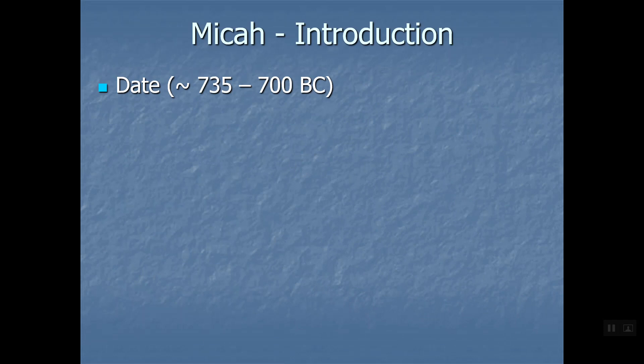We did five of the 12 last week. When I say the 12, I mean what are more readily known as the Minor Prophets, though I prefer to call them the 12. It is one book ultimately. We did through Jonah last week, and we're going to do Micah through Zephaniah this week.